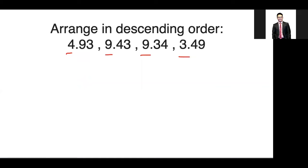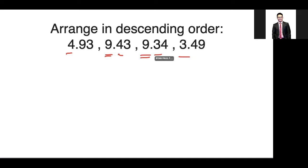Among these four, the highest ones place value is 9. But we have two numbers that have 9 in the ones unit, therefore we will move on to the second digit to find out which one is greater. This next digit is in the tenths place, and 4 is greater than 3, which means the highest value is 9.43.